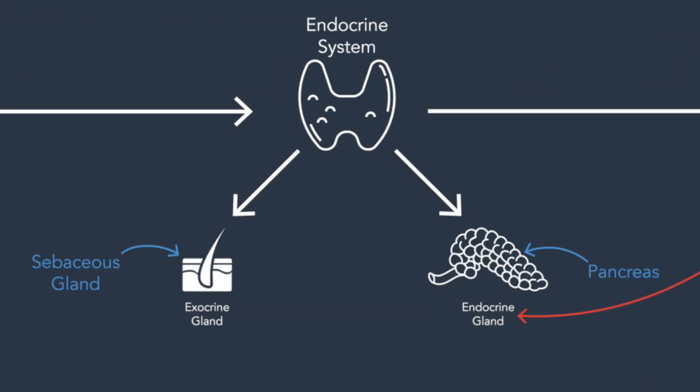The endocrine system is composed of glands throughout the body. Some of them are endocrine glands, and some of them are exocrine glands. Most exocrine glands are not part of the endocrine system — a couple are — but it's just important here to highlight the difference between the two to make sure that you understand which ones we're talking about.